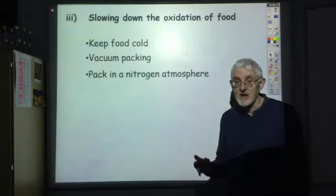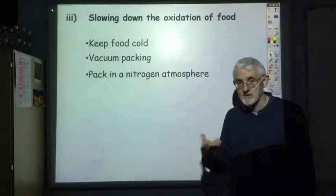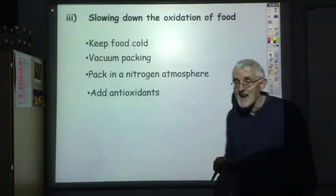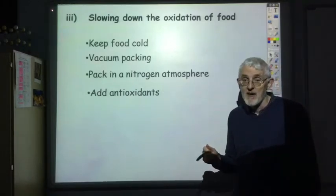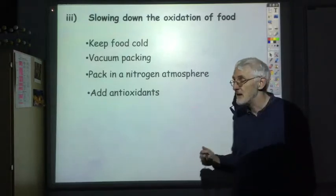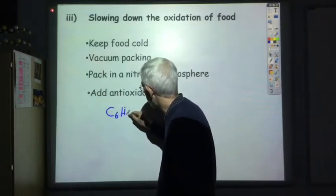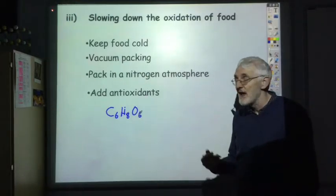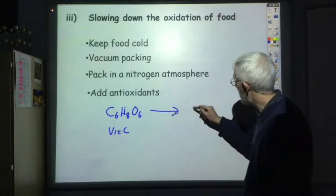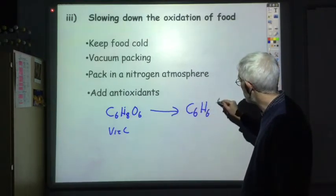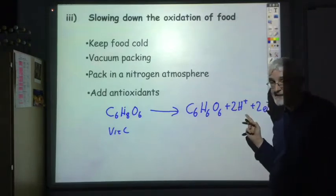Similarly, we could pack it in a nitrogen atmosphere. Many crisps are often, packets of crisps are packaged in a nitrogen atmosphere, again to exclude oxygen. Or we can add antioxidants. Antioxidants, as the name suggests, stop the oxidation of foods. We get natural and artificial antioxidants. Vitamin C, for example, is a natural antioxidant. It's got the molecular formula C6H8O6. And if you have that in your food, the vitamin C will oxidize as opposed to the food. And when it oxidizes, it loses two hydrogens and two electrons. So the vitamin C has been oxidized instead of the food.